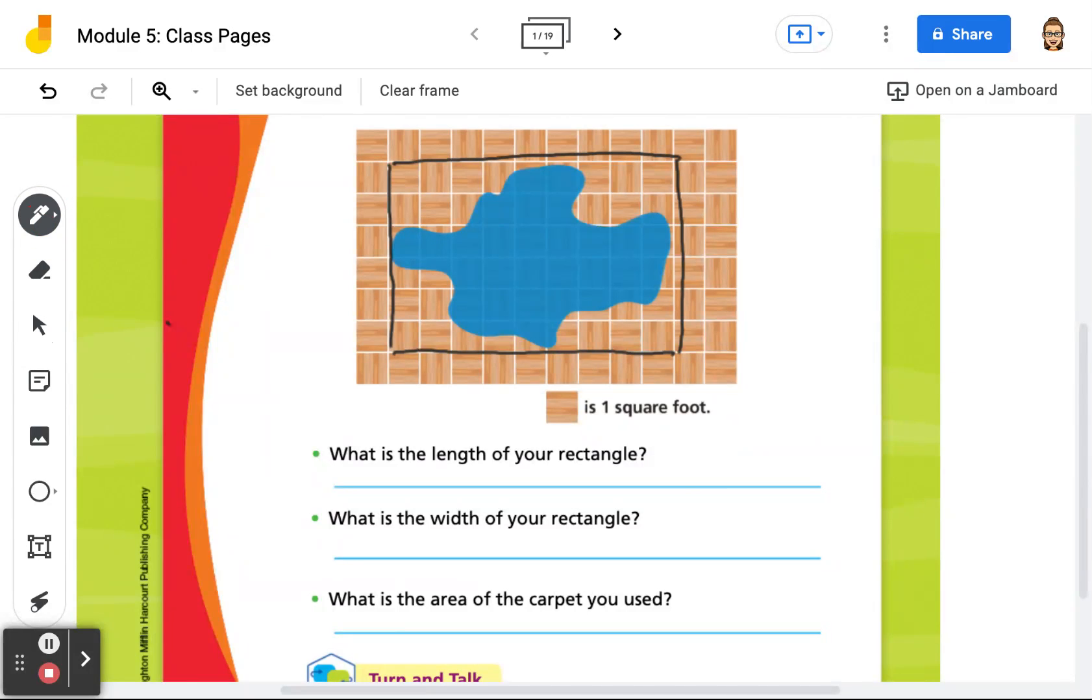So if we count across, 1, 2, 3, 4, 5, 6, 7, 8, 9, the length of a rectangle is 9 feet.